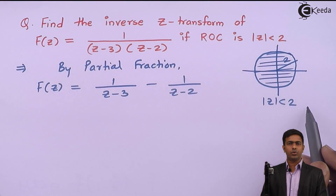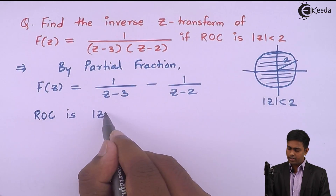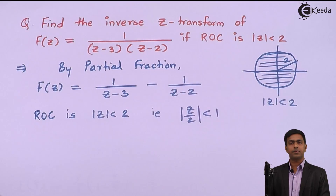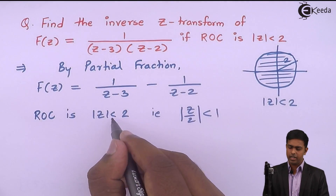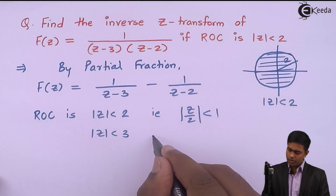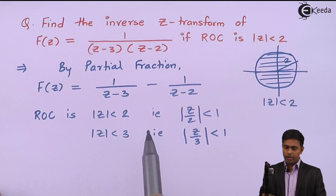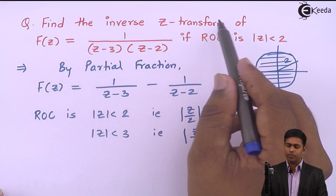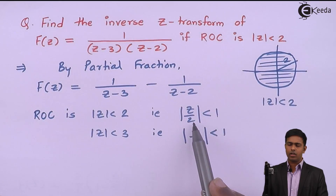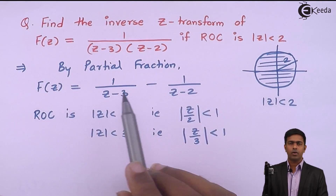Since the ROC is |z| < 2, this means |z/2| must be less than 1. And since |z| < 2 also implies |z| < 3, we can also say |z/3| must be less than 1. To find convergent series from the inverse Z-transform, we should work with these conditions: |z/2| < 1 and |z/3| < 1.